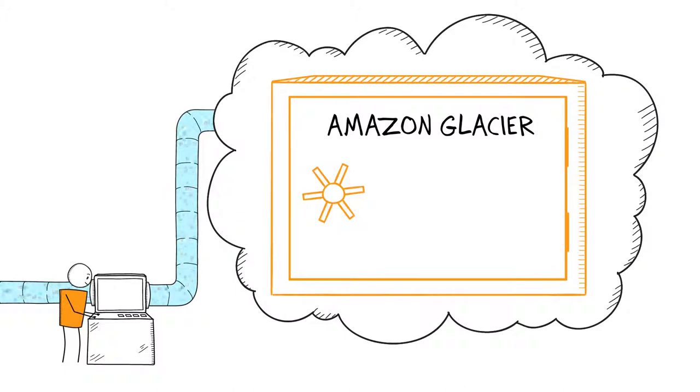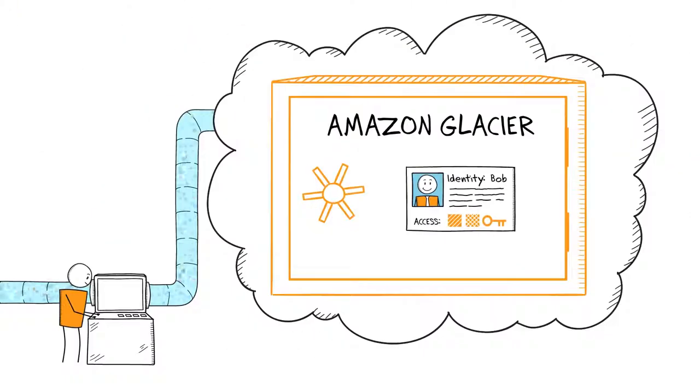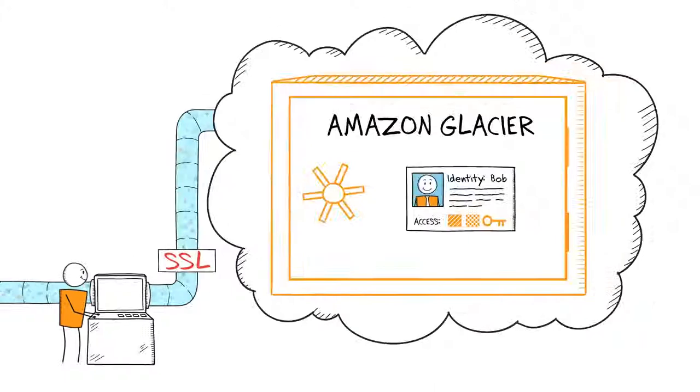Keeping your data safe against unintended access is really important. Amazon Glacier lets you manage fine-grained access to your data with AWS Identity and Access Management policies. It secures your data in transit with SSL and automatically encrypts your data at rest with 256-bit Advanced Encryption Standard.